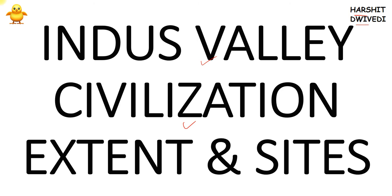On the map I will be showing you the important sites of Indus Valley civilization like Harappa, Mohenjo-daro, and so on. The very first important information with respect to Indus Valley civilization is that it was actually a Bronze Age civilization.